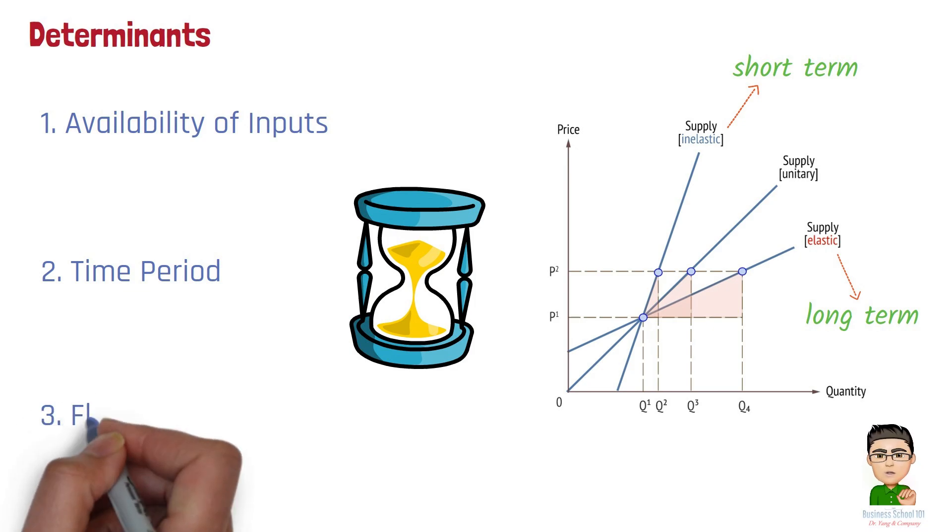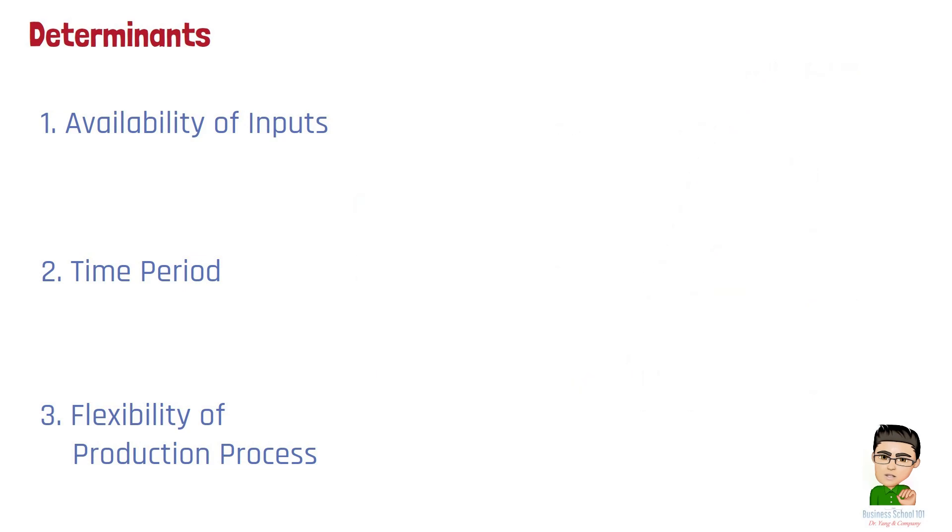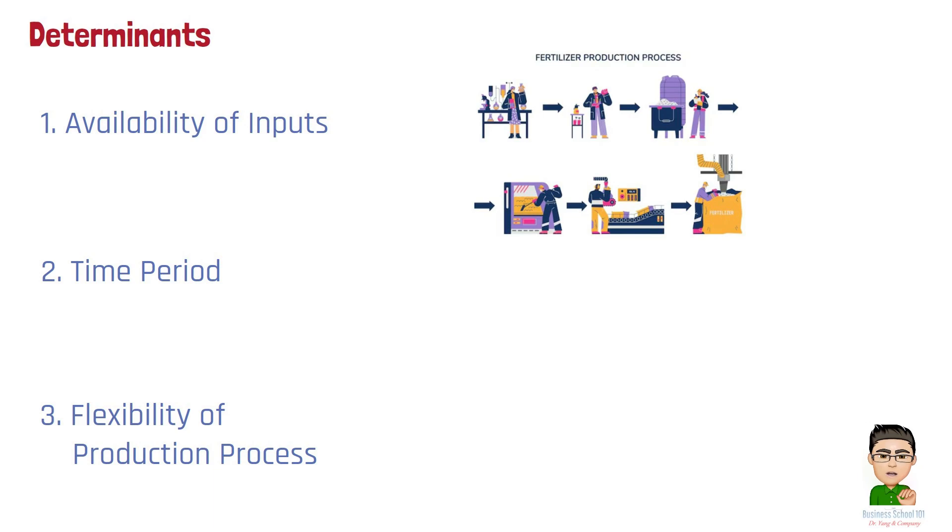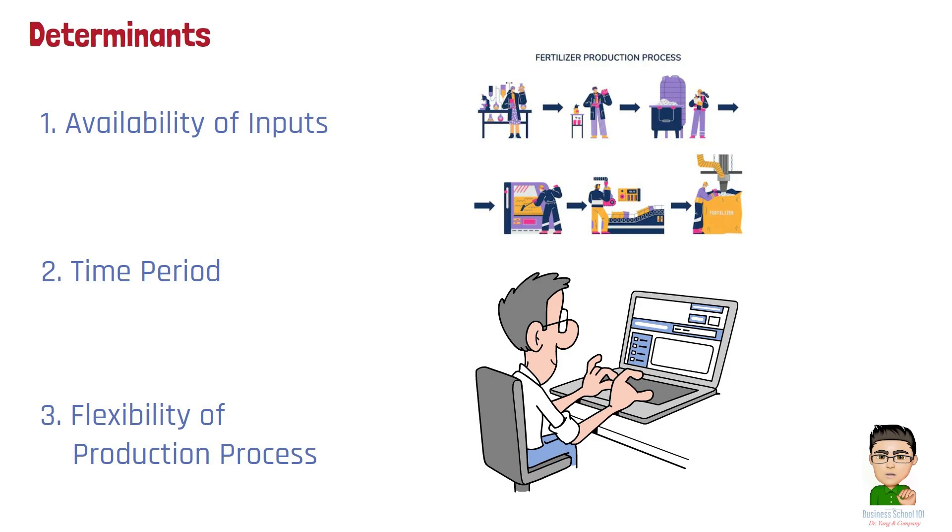Number 3: Flexibility of production process. If the production process can be easily adjusted to increase or decrease output, supply is more elastic. Industries with flexible manufacturing processes, where production can be ramped up or down without significant delays or costs, tend to have more elastic supply. For example, the production of digital products like software is highly elastic because increasing output involves minimal costs once the product is developed.